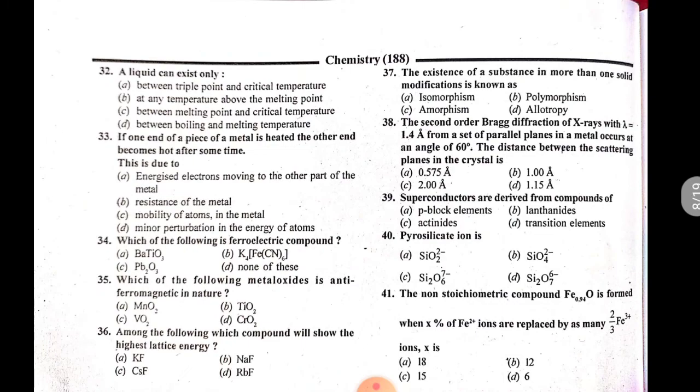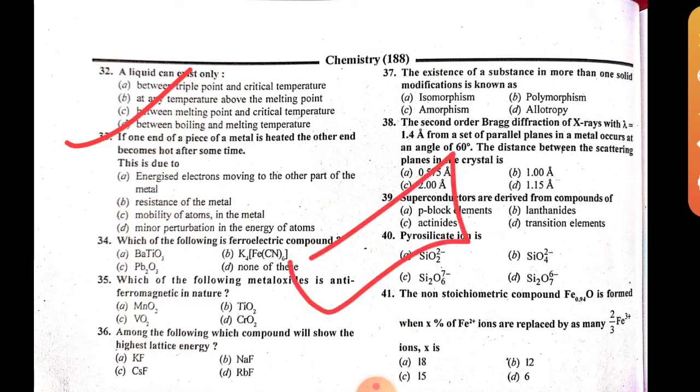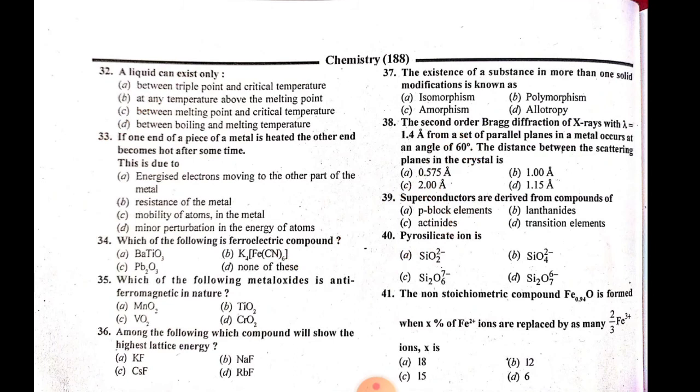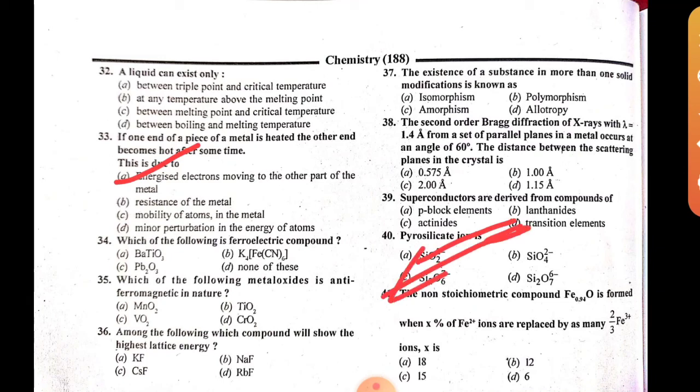Question 33: If one end of a piece of metal is heated, the other end will become hot after some time. This is due to energized electrons moving to the other part of the metal. The energized electrons gain energy and travel to the other part. Option A is the right answer.